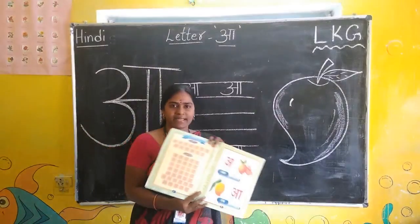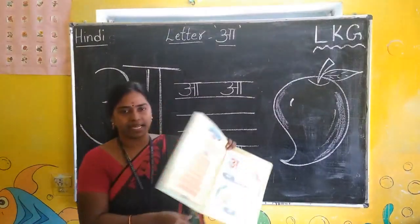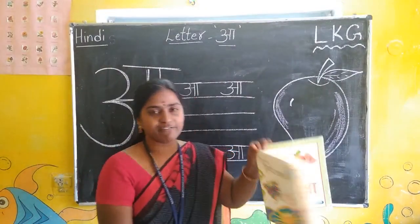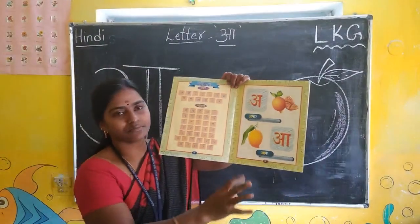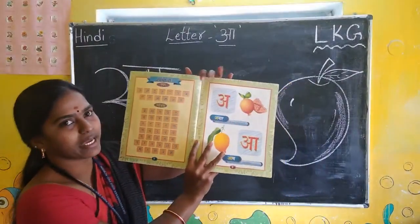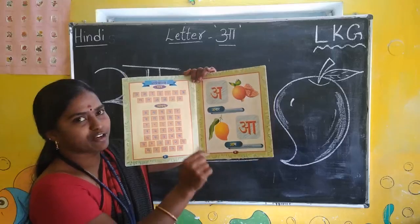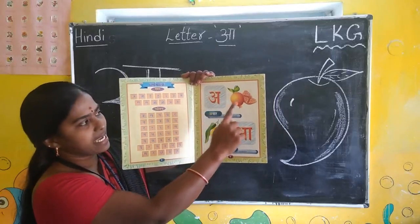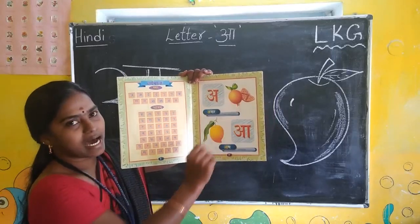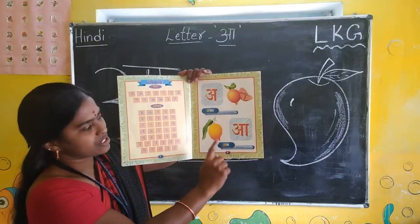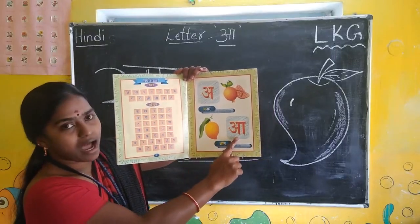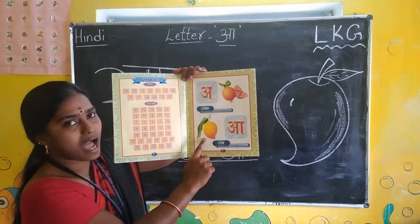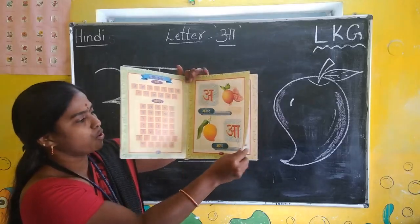Once we will practice orally. Picture reading we will practice. Look here. Repeat after me: A. Say Anar — Pomegranate. A — say Anar, Pomegranate.